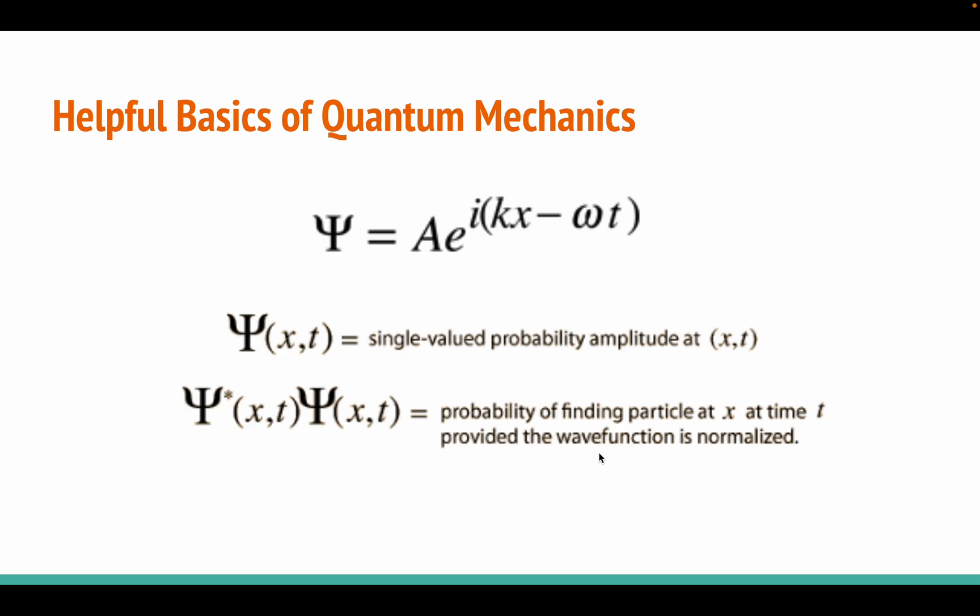The wave function is a complex valued function that describes the states of particle or system and gives the probability amplitude for the particle to be in certain state or location. The probability density of finding a particle at a particular location is given by the square of the absolute value of this complex function.